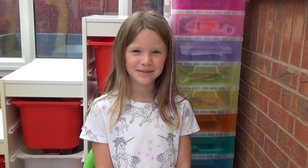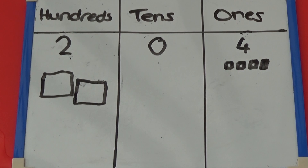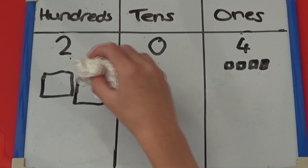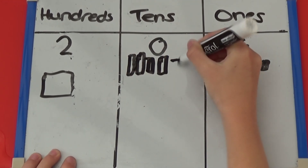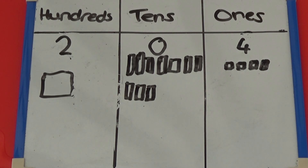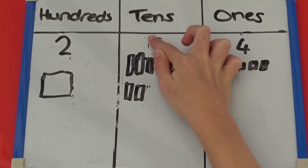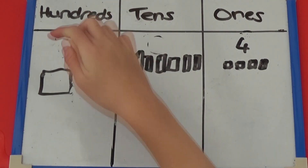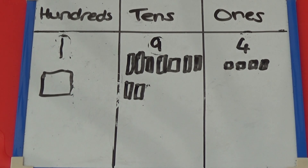I can also represent this as a picture. I have drawn out the Dienes for the number 204. I have no tens to rub out, so I need to exchange one of my hundreds for 10 tens and draw them in the tens column. I can now take away one ten. So my number now is 194.